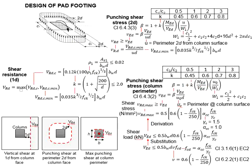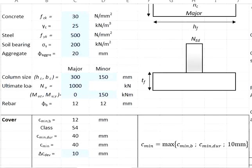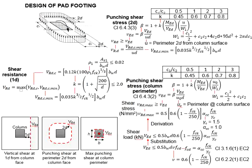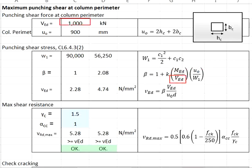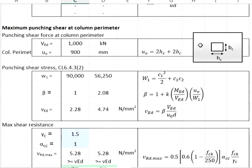Having k obtained, now you need the moment. The moment is acting in the minor axis, where there is zero moment in the major axis. Therefore, for the major axis, the beta term will be equal to zero due to zero moment, and beta will be equal to 1.0. That is why beta for the major axis equals 1.0. For the minor axis, M_Ed is equal to 150, V_Ed is the axial load which is 1000 kN, U0 is 900 mm, and k equals 0.45.